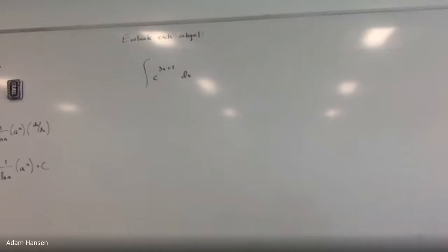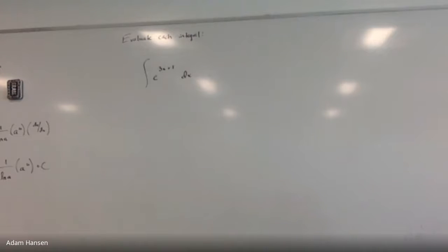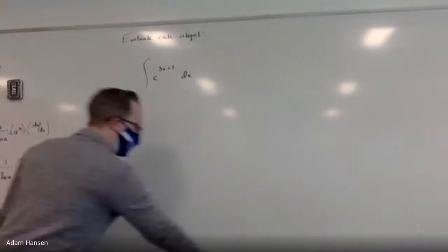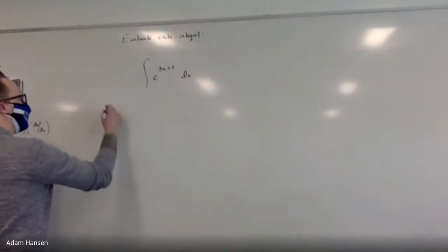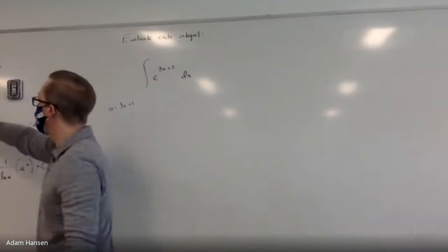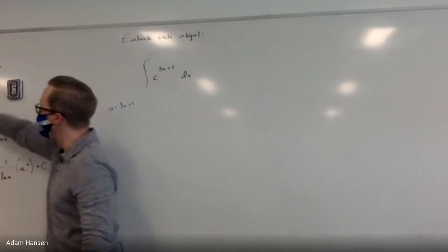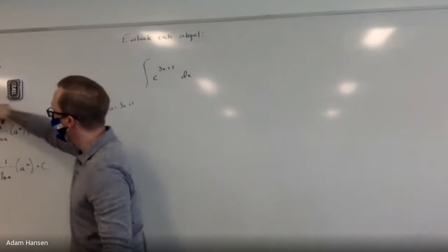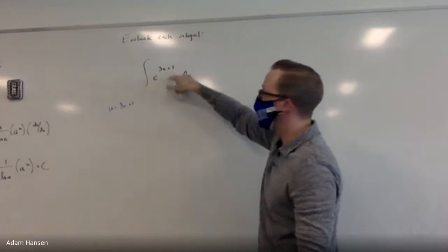What is the indefinite integral — or anti-derivative — of e to the 3x plus 1? This is base e, and I recognize this as a composite function with an inner function. So let's use a u-substitution to evaluate it. I'm trying to relate it back to the formula where the anti-derivative of e to the u du is e to the u plus C. So I'm going to let u equal 3x plus 1.